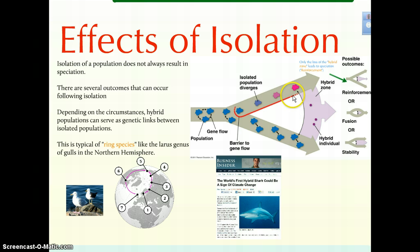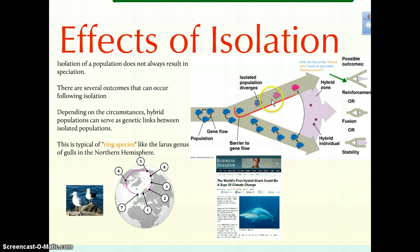The first potential impact could be what's called reinforcement. The idea being the barriers between the two are maintained. Hybrid individuals do poorly in relation to the separate populations, and over time the hybrids become fewer and fewer in number as the two separate populations evolve in different directions. This ultimately will lead to complete speciation.